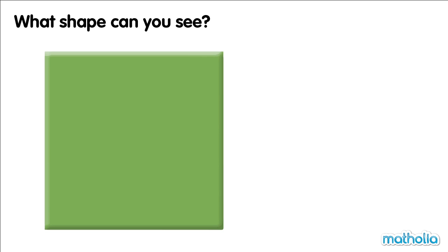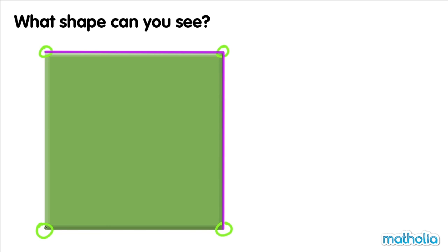What shape can you see? There are one, two, three, four corners. And there are one, two, three, four sides. This shape has four corners and four sides. This shape is a square.